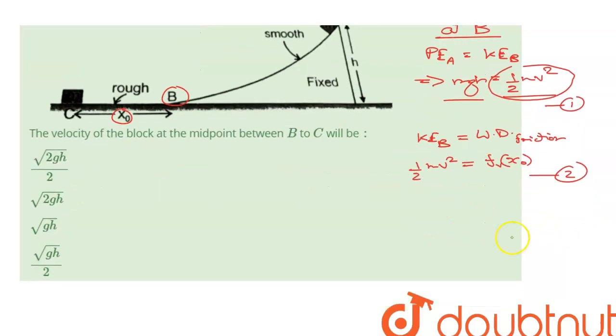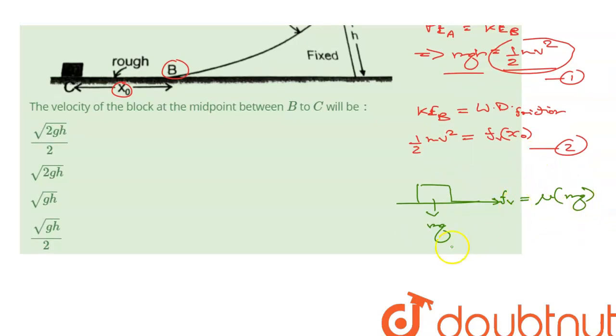At point B, the block has mass M, and due to the motion there will be a frictional force. This frictional force will be equal to mu times Mg. We can put that in equation number 2, so 1/2 Mv squared is equal to mu times Mg times x0.